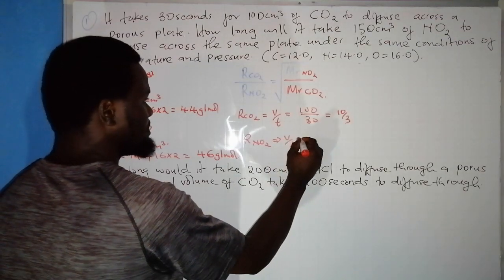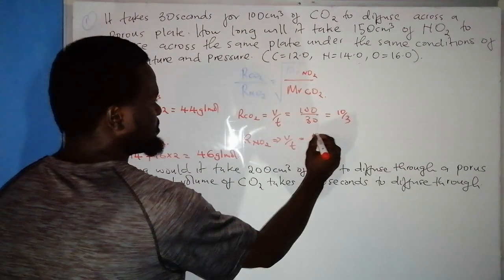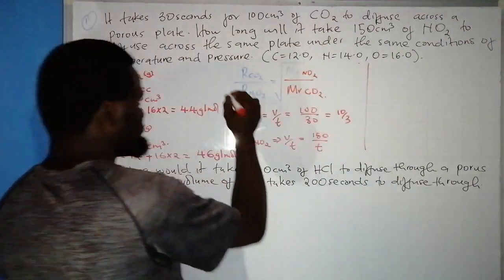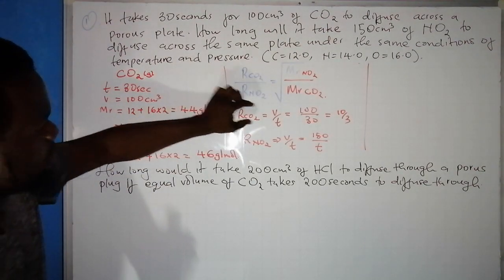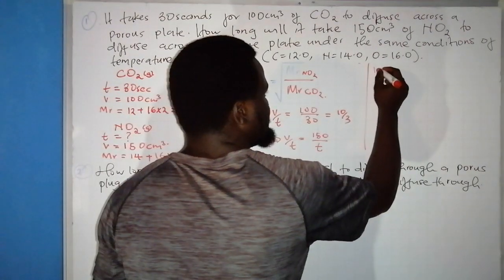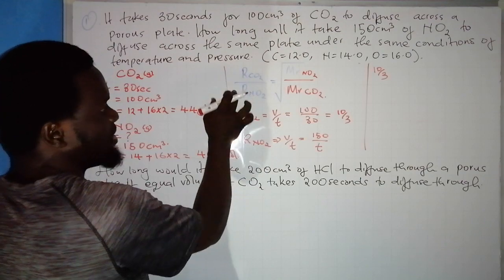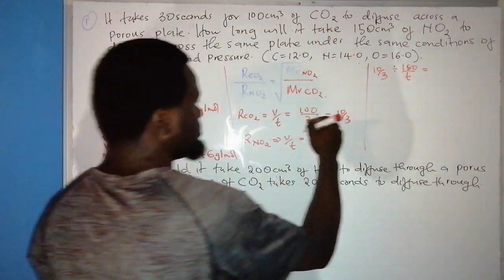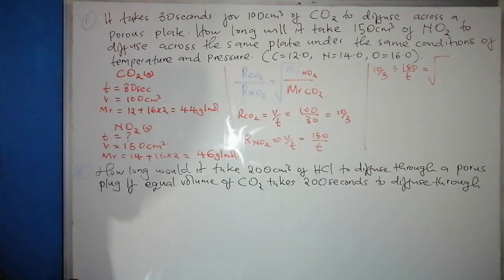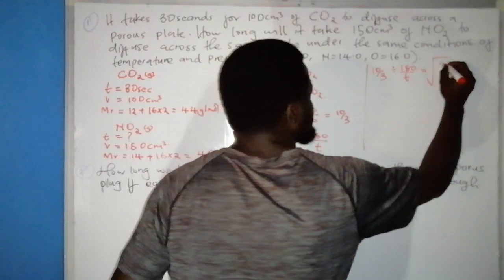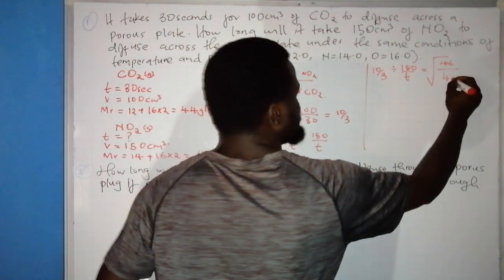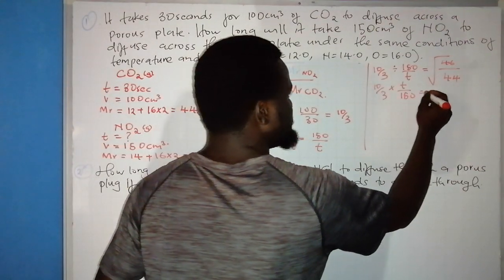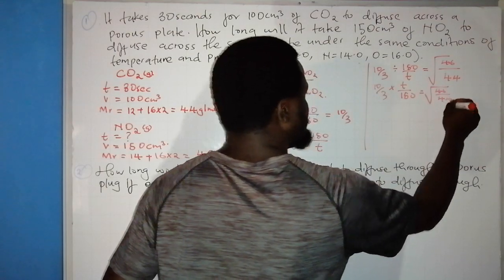Substituting into the equation: (10/3) ÷ (150/t) = √(46/44). Dividing by a fraction means multiplying by the reciprocal: (10/3) × (t/150) = √(46/44), which gives 10t/450 = √(46/44).